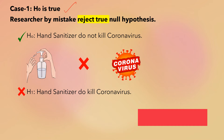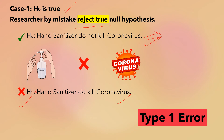But if the researcher by mistake rejects the true null hypothesis, then the researcher will accept the wrong alternative hypothesis. This null hypothesis is true, but the researcher rejected it and accepted the wrong alternative hypothesis. It simply means that in the actual scenario, the sanitizer does not kill coronavirus, but the researcher has come to the conclusion that the sanitizer does kill coronavirus.